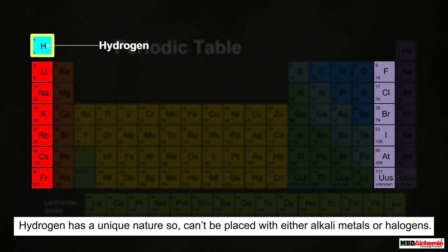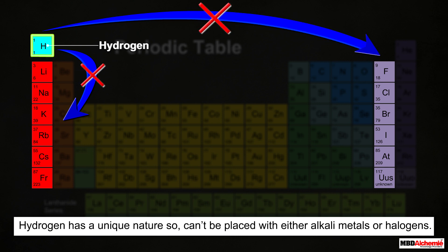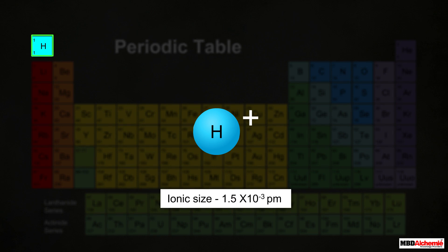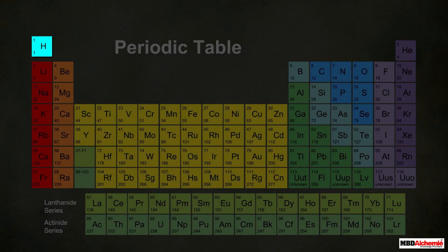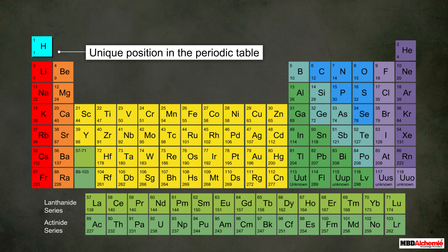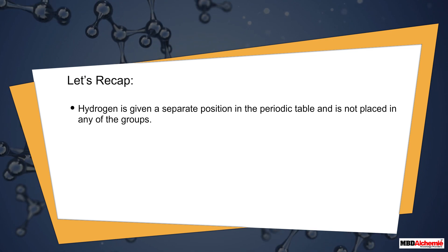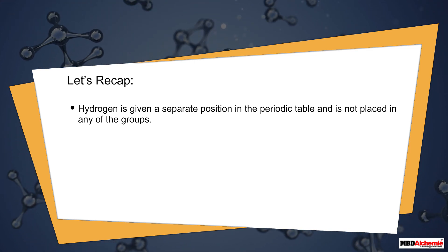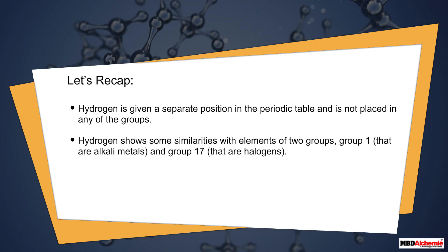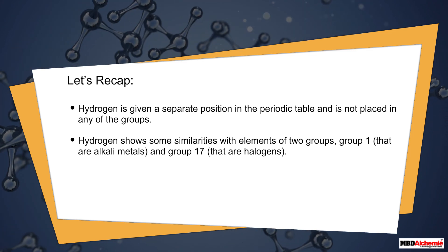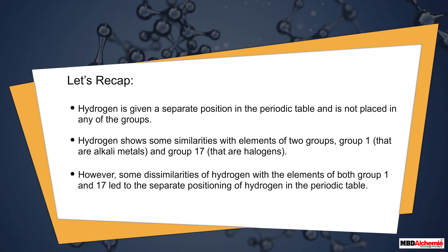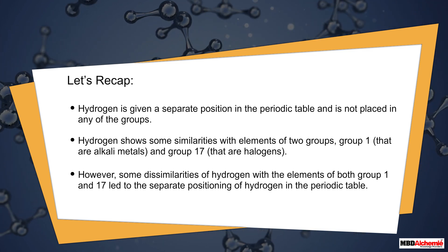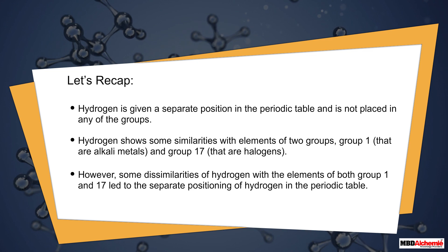So we have seen that hydrogen has a unique nature, and it can't be placed with either alkali metals or halogens. The positive ion of hydrogen also has an exceptionally small size compared to any other ion, which further supports its unique position in the periodic table. To recap: hydrogen is given a separate position in the periodic table, showing some similarities with both Group 1 (alkali metals) and Group 17 (halogens), but dissimilarities with elements of both groups led to its separate positioning.